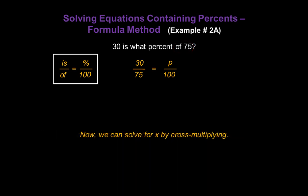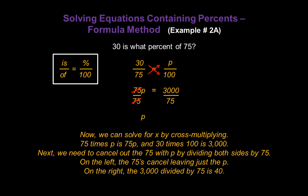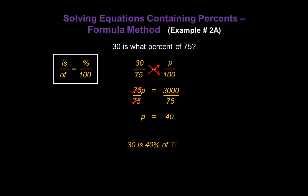Now we can solve for P by cross-multiplying. 75 times P is 75P, and 30 times 100 is 3000. Next, we cancel out the 75 with P by dividing both sides by 75. On the left, the 75s cancel, leaving just our variable P. And on the right, 3000 divided by 75 is 40. So P is 40, meaning 30 is 40% of 75.